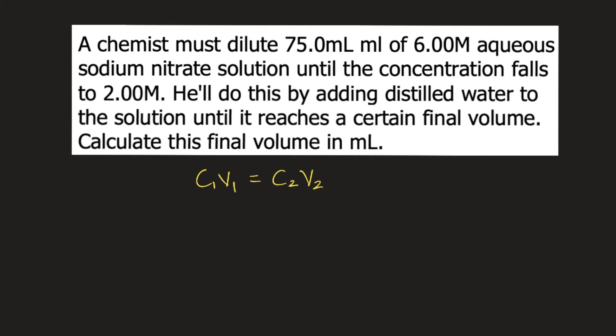Our problem is asking us to solve for the final volume, so we are solving for V2. To solve for V2, you need to rearrange the equation. Just divide both sides by C2. C2 on the right side will cancel. That means V2 equals C1 V1 over C2.